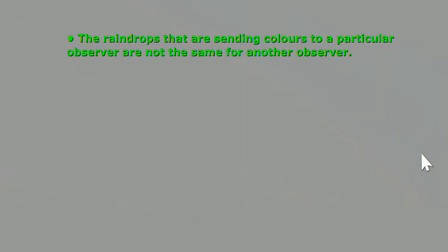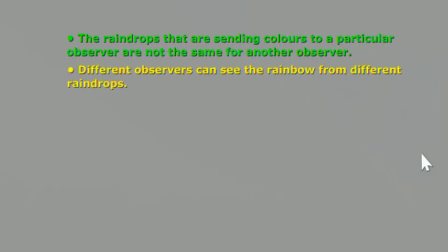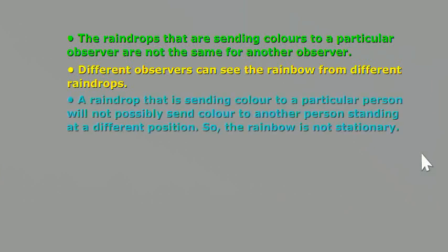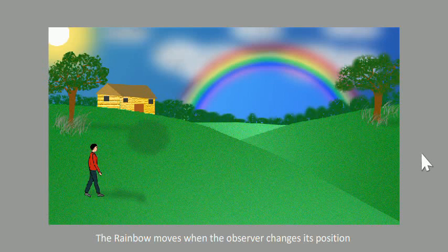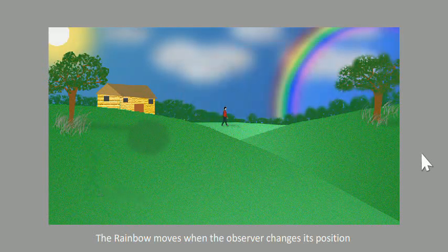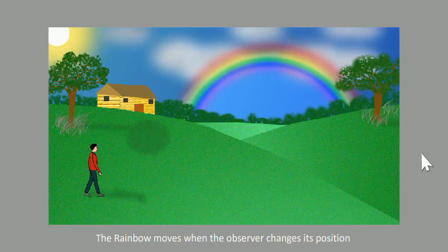Now one thing is for sure, the raindrops that are sending colors to a particular observer are not the same for another observer. Different observers can see the rainbow from different raindrops. A raindrop that is sending color to a particular person will not possibly send color to another person standing at a different position. So the rainbow is not stationary. It moves with change of a position and one cannot reach the end of a rainbow to achieve the goal point.